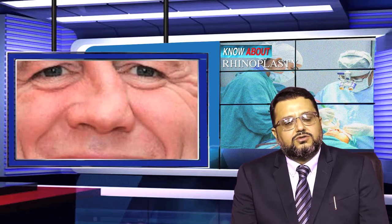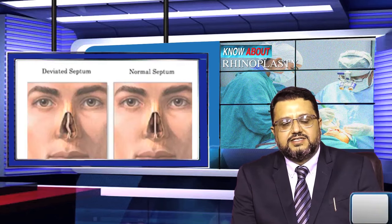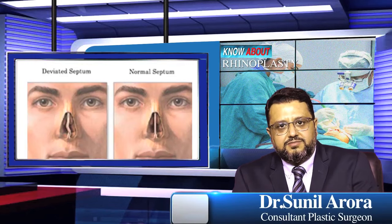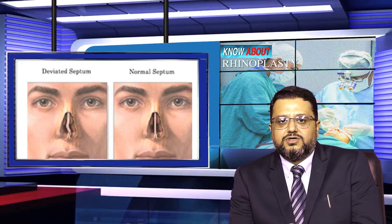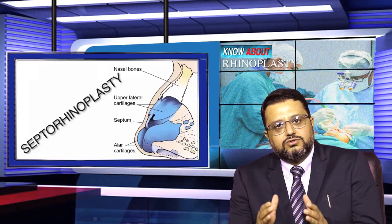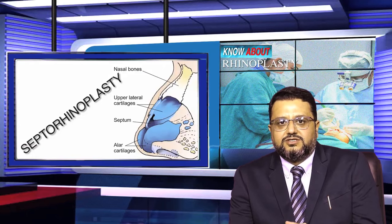Breathing defects agar naak ki wajah se hain, to uska sabse common karan DNS — deviated nasal septum — aur crooked nose hota hai. Agar crooked nose ke saath DNS bhi hai, to definitely septorhinoplasty ke dwara theek ki ja sakti hai. Isme do cheezein rehti hain: ek nasal breathing ka main component aur naak ki aesthetics, yaani naak ki sundarta — dono components septorhinoplasty ke dwara plastic surgery se bahut acche se correct ki ja sakti hain.